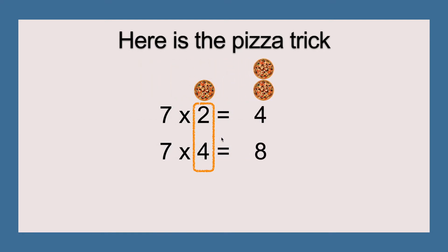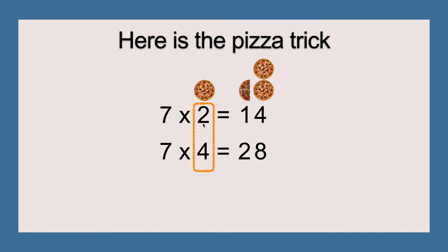We are going to multiply those numbers by two. Two times two equals four, so four goes in our tens place. Four times two equals eight, and eight goes in our ones place. Then we divide: two divided by two equals one, which goes in the tens place; four divided by two equals two, also in the tens place. So seven times two equals 14 and seven times four equals 28.